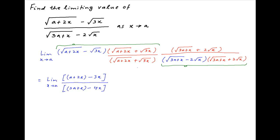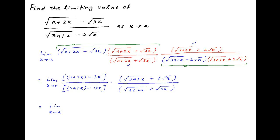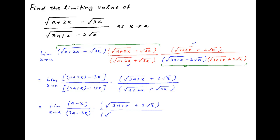The remaining term in the numerator is root of 3a plus x plus 2 root x, and the remaining term in the denominator is root of a plus 2x plus root 3x. Therefore the given limit is equal to limit x tending to a: a minus x divided by 3a minus 3x, multiplied by root of 3a plus x plus 2 root x, divided by root of a plus 2x plus root 3x.